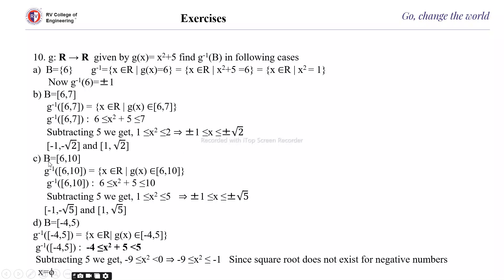Suppose b is the interval [6, 10]. Then x belongs to ℝ such that g(x) belongs to [6, 10], meaning 6 ≤ x² + 5 ≤ 10. Subtracting 5, you get 1 ≤ x² ≤ 5, so ±1 ≤ x ≤ ±√5.